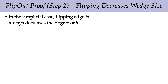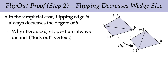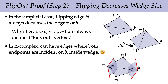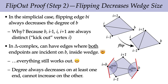Next we want to see that the algorithm actually makes progress. In the simplicial case, flipping edge bi always decreases the degree of b, because the vertices b, i-minus-one, i, and i-plus-one are always distinct, so performing this edge flip just kicks out one of the vertices from the wedge, making it smaller. In the case of a general delta complex, we can have edges where both endpoints are incident on vertex b from inside the wedge — this is hard to draw — but everything still works out. Upon an edge flip, the degree always decreases on at least one of the two ends of the edge and can't increase on the other one.